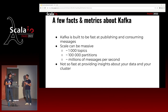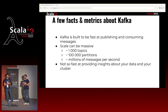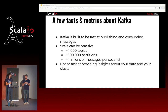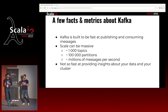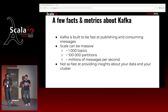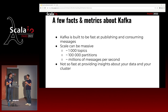Kafka is built for large-scale publishing and consuming of messages. It's like thousands of topics, hundreds of thousands of partitions, and many millions of messages per second. It's really powerful, fast, and large-scale. However, it's not so fast when you want to have meta information about your cluster, like how many nodes, how many partitions, how much data in this partition. It's not designed to be fast for that — it's designed to publish and consume things fast.